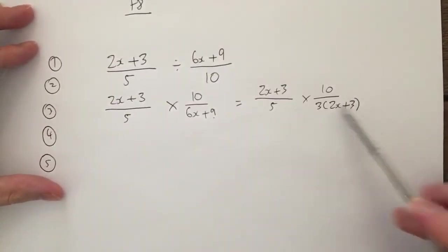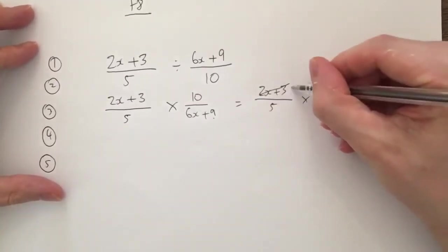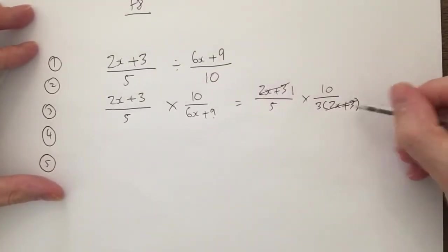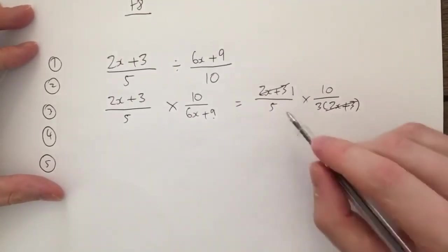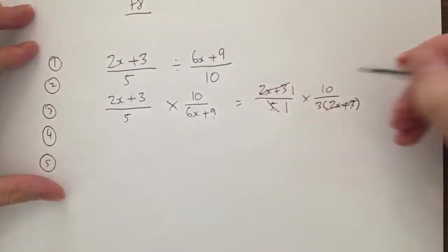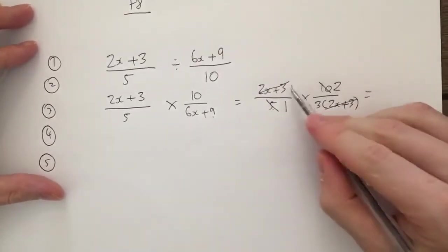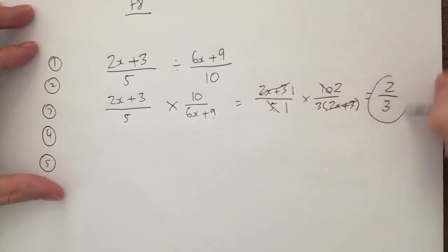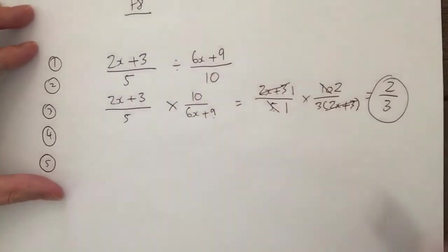Our third step was, can we cross simplify? 2x plus 3, and 3 bracket 2x plus 3, yes, they both go into 2x plus 3. So therefore I can divide this by 2x plus 3, and I write 1 because nothing else is there. Divide this by 2x plus 3, don't need to write 1 because it won't affect the 3 there. I then look, can I cross simplify for these next bits as well? The answer is yes. 5 and 10, they both go into the 5 times table, so I divide 5 by 5 to get 1, I divide 10 by 5 to get 2. 1 times 2 is 2, 1 times 3 is 3, final answer. So this whole question here turns out just to be that final answer because we're accurately factorizing and cross simplifying.